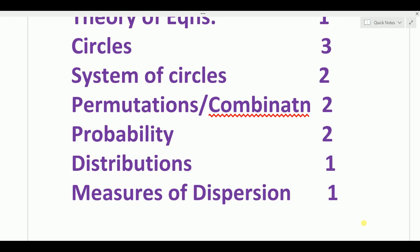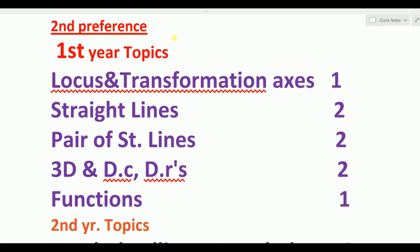Now look at the second preference topics. Second preference has lower weight than first preference. Transformation of axes takes only one day — it is a simple topic, so one day is enough. Next, straight lines — a lengthy topic with three to four questions, spend two days. Pair of straight lines is also lengthy, spend two days. 3D including DCSDs and DRs — spend two days. Functions: one day is enough because a lot of the portion is deleted.